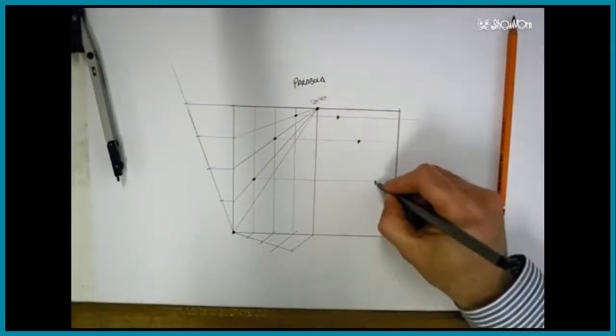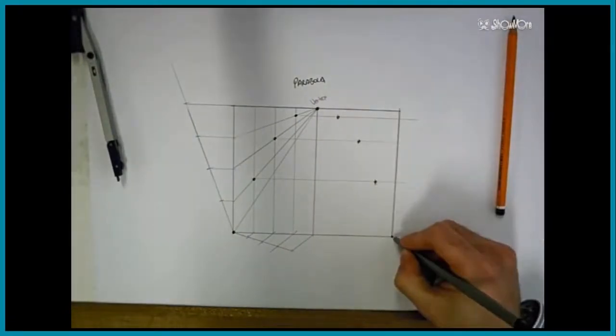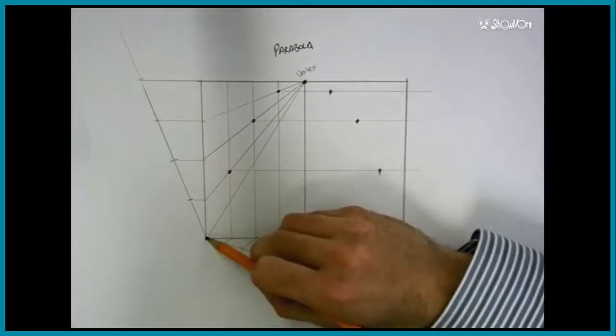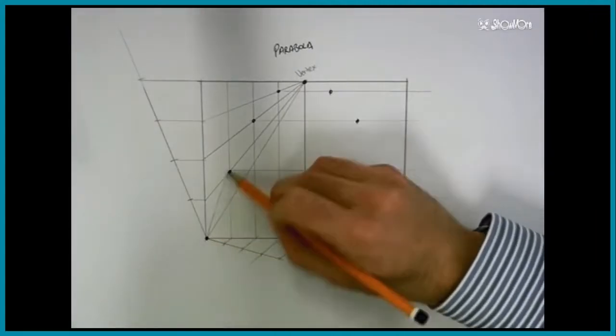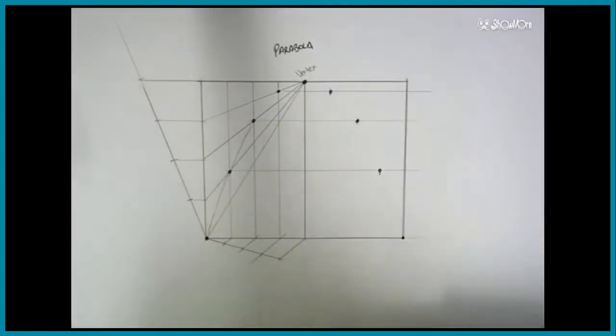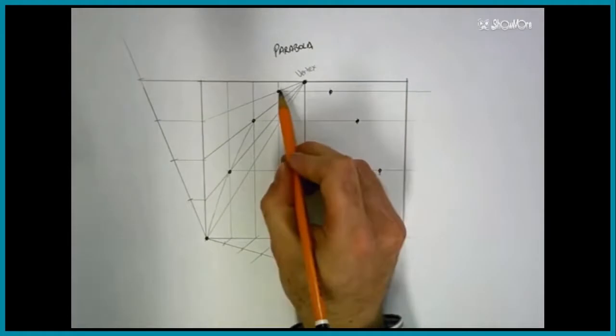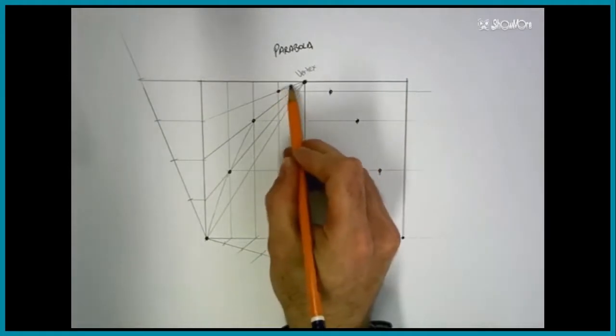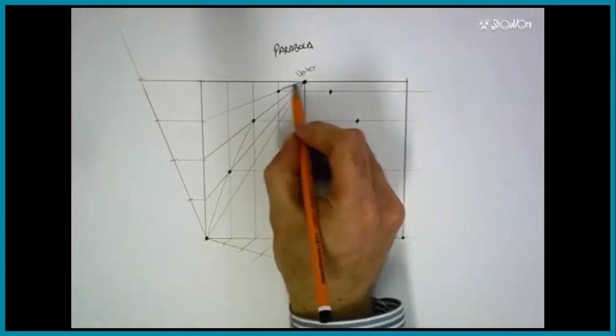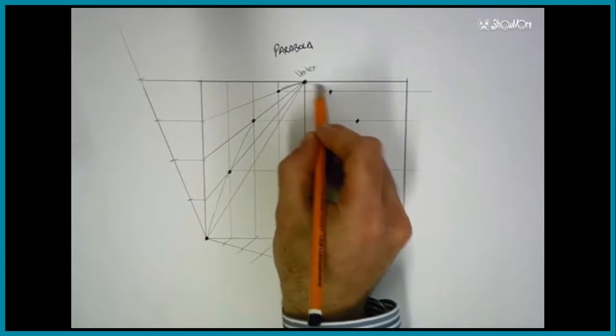This will give us a series of points for our parabolic curve. We can now join these together carefully to form a parabola. This will be done freehand, but care should be taken to be as accurate and neat as possible.